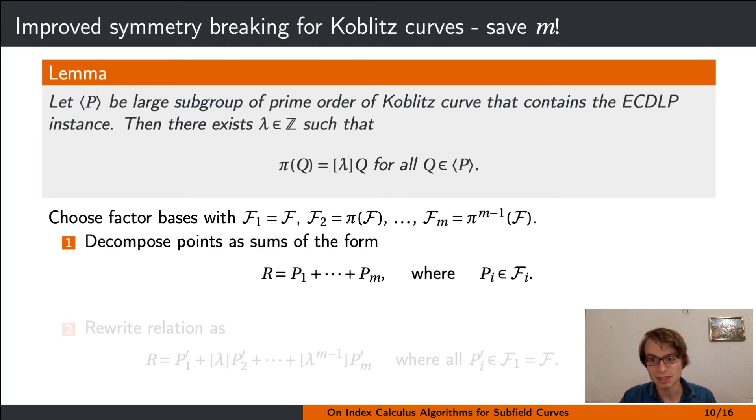The idea for symmetry breaking is now as follows. As with Matsuo, we can choose m disjoint factor bases. Then we choose them in a specific form—namely, the second one is the image under the Frobenius endomorphism of the first one, the third one the image of the second one, and so on. Constructing such factor bases is easy if we have a normal basis of our extension field Fq^n over our subfield Fq, but more details can be read in the paper.